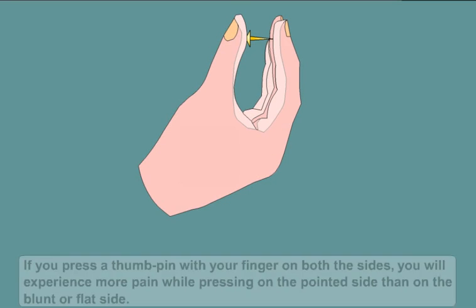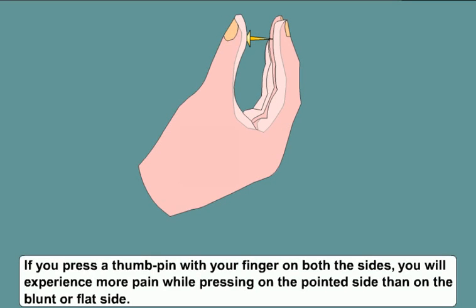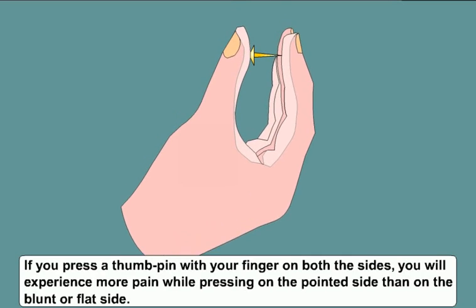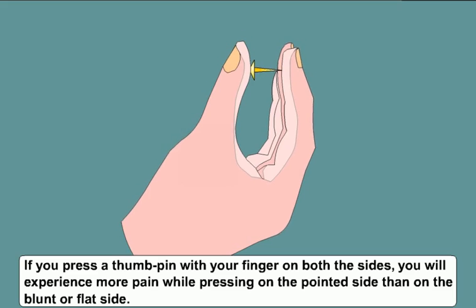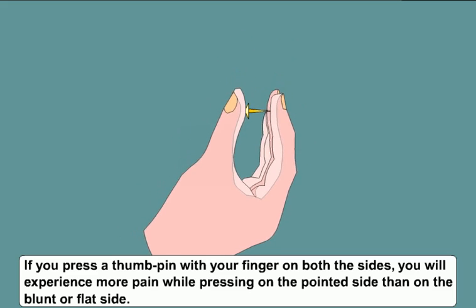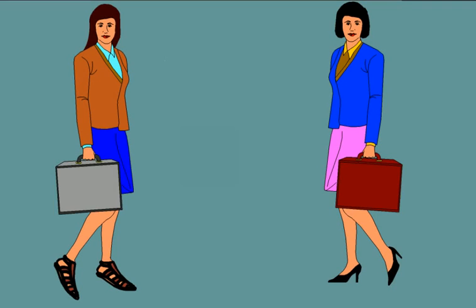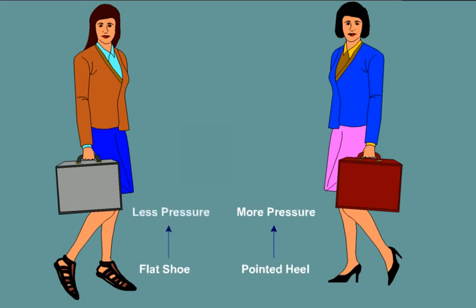Similarly, if you press a thumb pin with your finger on both sides of the pin, you will experience more pain while pressing on the pointed side than on the blunt or flat side. In the same way, the pointed heel of the shoe of a girl exerts more pressure than a flat shoe.